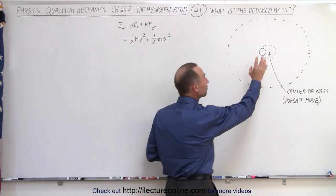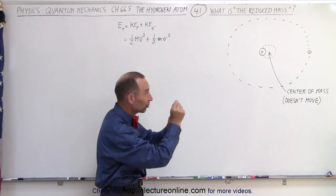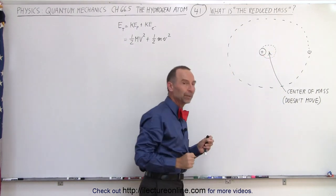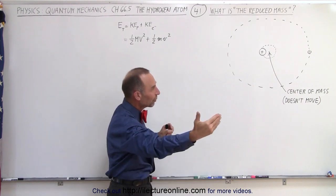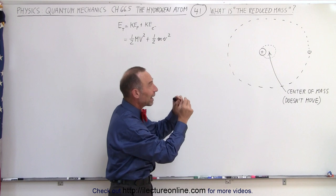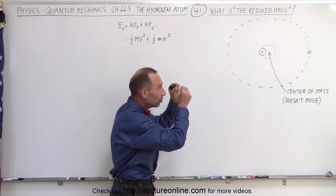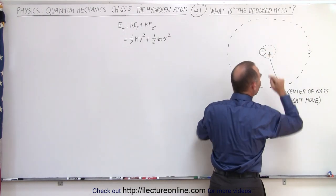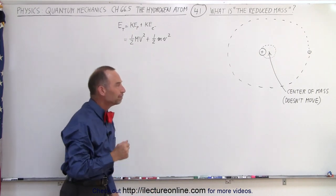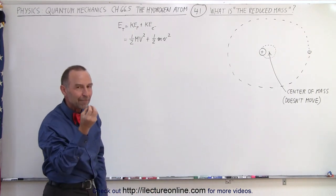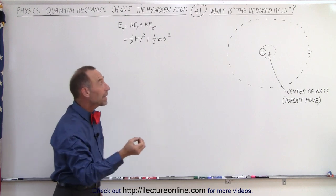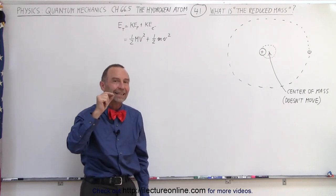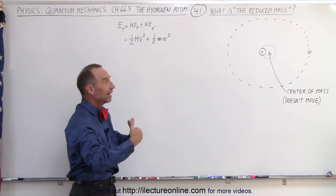The nucleus does not stay put at the very center but actually moves. The proton actually makes small little circles around the center of mass of the atom. The electron has a very tiny mass but is very far away. The proton has a big mass but it's close to the center of mass. As the electron goes around the nucleus, the proton will make little circles as well — they stay on opposite ends of the center of mass of the atom. Because of that, the mass of the electron is not as effective as it would be if the proton stayed at the center and didn't move. So it acts as if the electron is slightly less massive than it actually is.